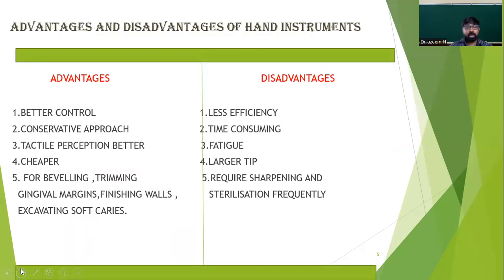The advantages of hand operated instruments include better control, can be used for conservative cavity preparation, better tactile perception, and the instrument is more precise — particularly useful for beveling, trimming gingival margins, finishing walls, and excavating soft caries. Disadvantages include less efficiency, time-consuming operation, operator fatigue, hand fatigue, instruments have a larger size, and require frequent sharpening and sterilization.